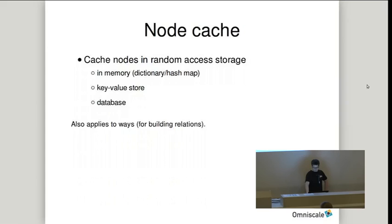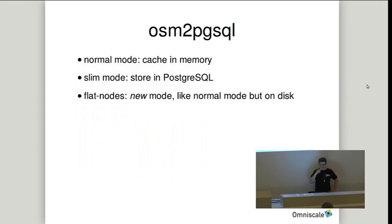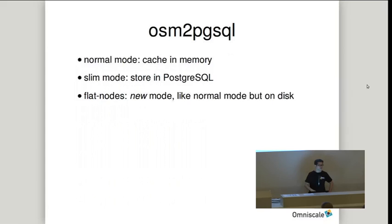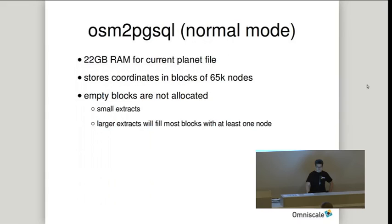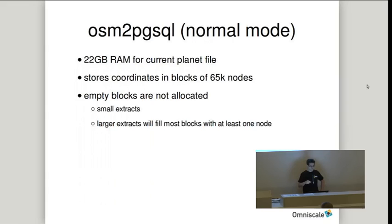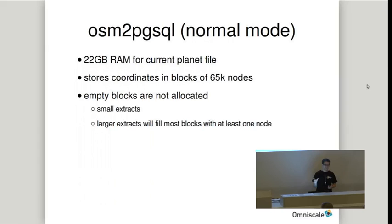OSM2PGSQL has two modes: a normal mode where it caches everything in memory, a slim mode where it caches nodes in PostgreSQL, and a newer flat-nodes option suitable only for whole-planet imports. The normal mode caches all nodes in RAM — for a current planet file you need 22 gigabytes of RAM. It stores coordinates in blocks of 65,000 nodes so empty blocks aren't allocated, meaning small extracts need less memory. But for larger extracts where most blocks are filled, you still need over 20 gigabytes of RAM even for Europe.